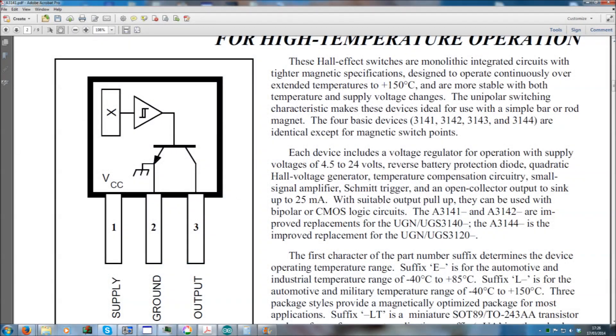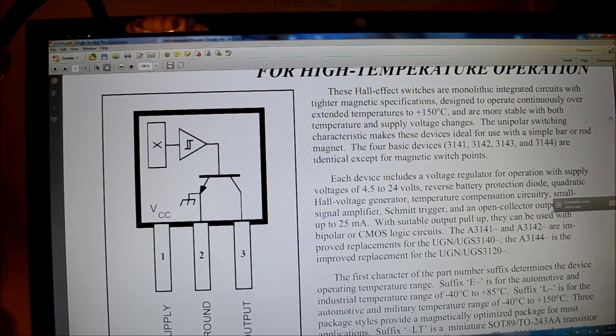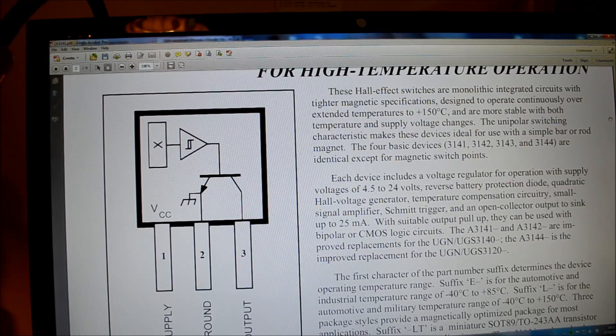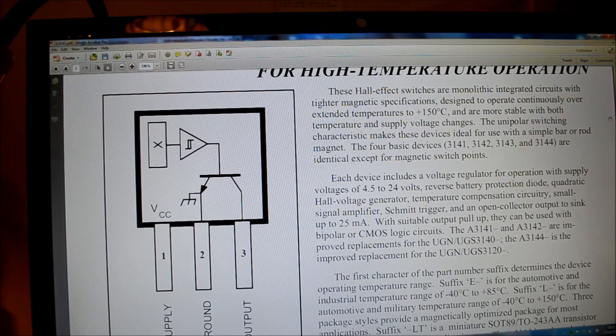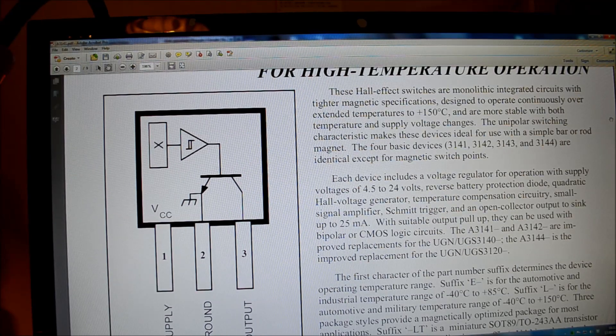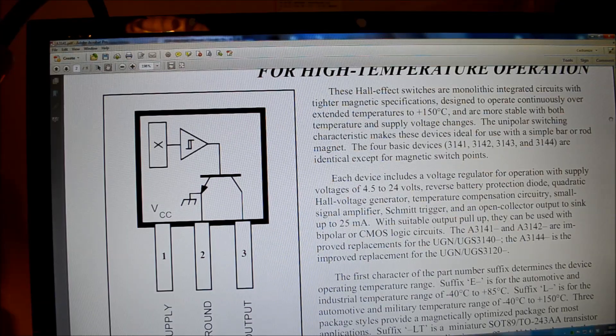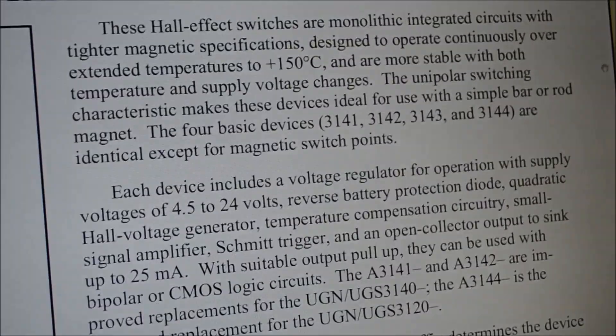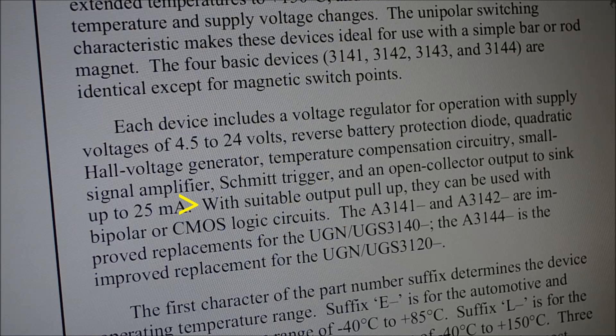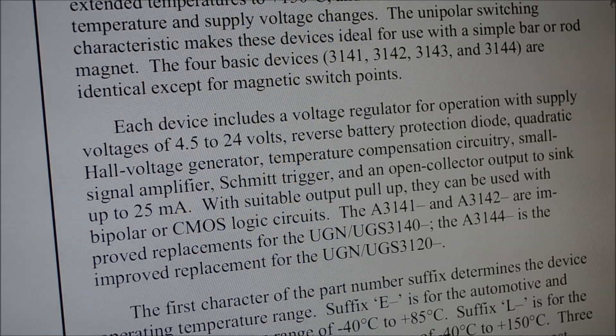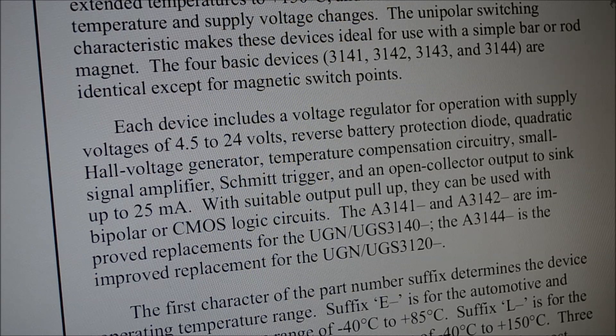Okay, I think I just worked out how this works. I've only just had a good look at that diagram. The output goes low, I think. So I'll pull up the output and then see what happens. What I've just noticed is, with suitable output pull up, they can be used with bipolar or CMOS logic circuits. I'm going to be using a CMOS logic circuit.